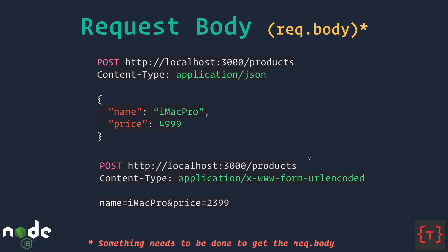Now let's look at the request body. Suppose we make a POST request to localhost port 3000 slash products, sending a Content-Type header of application/json. This means we're sending a JSON body in the request, and inside an Express application it can be accessed using request.body — but we have to do something before we can use request.body.